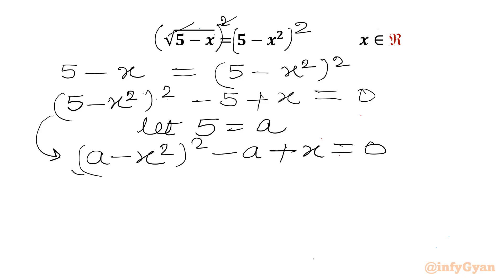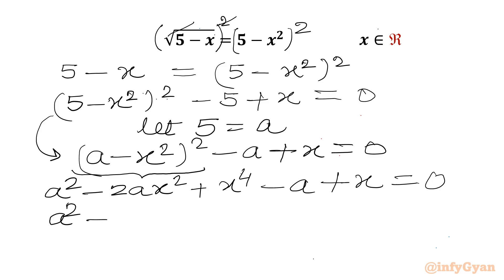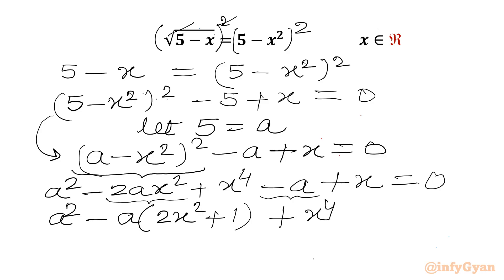Let us use the (A minus B)² identity here. So I can write A² minus 2Ax² plus x⁴ minus A plus x equal to 0. From the A² term and the minus A term, we will take minus A common, giving us A² minus A(2x² plus 1), then plus x⁴ plus x equal to 0.